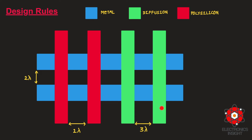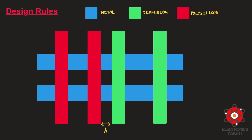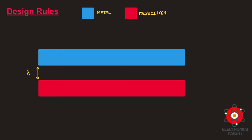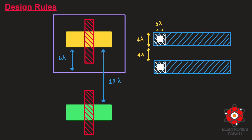The spacing between two different diffusion layers should be 3 lambda, and the spacing between two metal layers should be 2 lambda. The diffusion layer to polysilicon spacing has to be maintained at 2 lambda to prevent the lines from overlapping and forming unwanted capacitance. Metal lines can pass over both diffusion and polysilicon layers without creating any electrical effect. The spacing between the metal layer and the polysilicon layer also has to be maintained at 2 lambda.